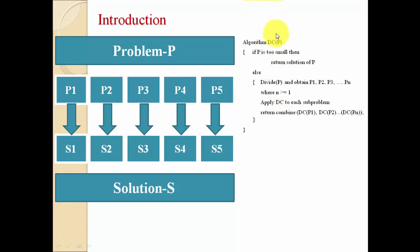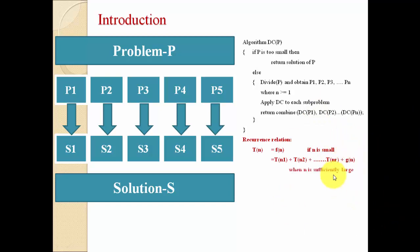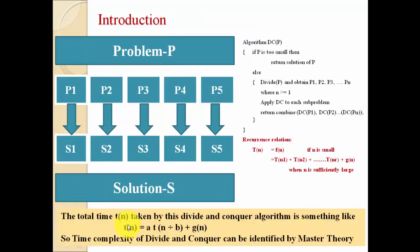Based on this recursive algorithm we can write one recurrence equation. If the value of n is too small, we can directly find the solution — T(n) = F(n). If n is large, we divide into parts and each part requires time T(n1) + T(n2) + ... + T(nr). Once we get the solution of every part we combine them, which also requires some time G(n). So the total time when n is sufficiently large includes that combination time plus G(n).